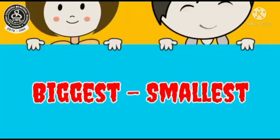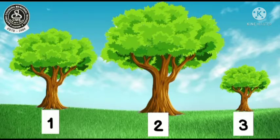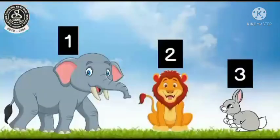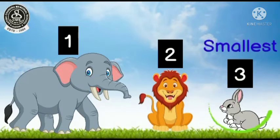Biggest, Smallest. Let's find out what is biggest and what is smallest. From these three trees, which is biggest? Yes, this second tree is biggest. Now from these three animals, which is the smallest? Yes, this third animal, rabbit, is smallest.